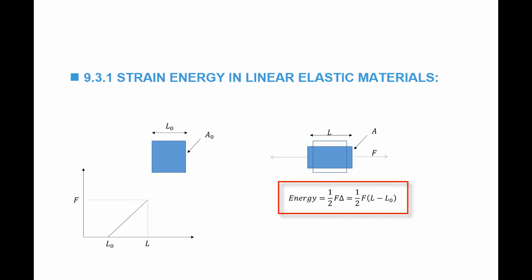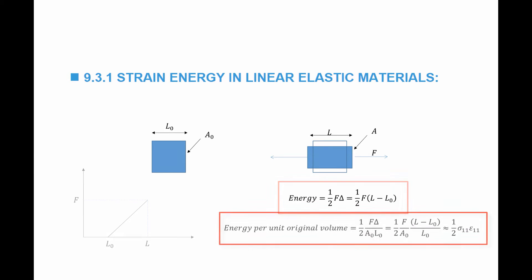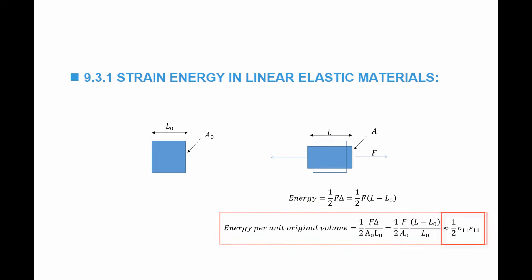Delta is equal to L minus L₀, and the energy per unit original volume is equal to half F·delta divided by the original volume A₀·L₀, which is equal to half F divided by A₀, multiplied by (L minus L₀) divided by L₀, which is basically half σ₁₁ multiplied by ε₁₁.